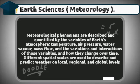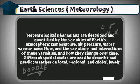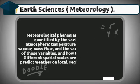Meteorological phenomena are described and quantified by the variables of Earth's atmosphere: temperature, air pressure, water vapor, mass flow, and the variations and interactions of those variables and how they change over time. Different spatial scales are used to describe and predict weather on local, regional, and global levels.